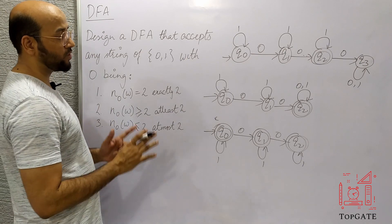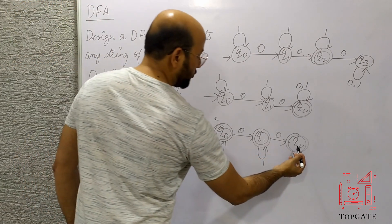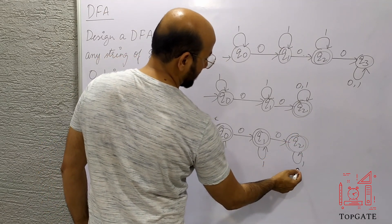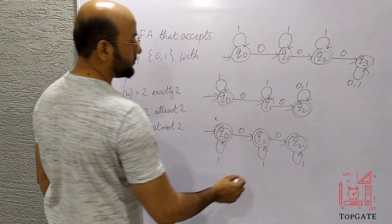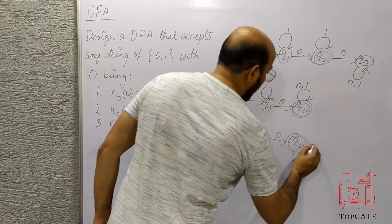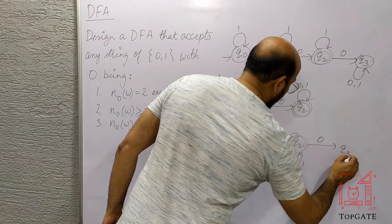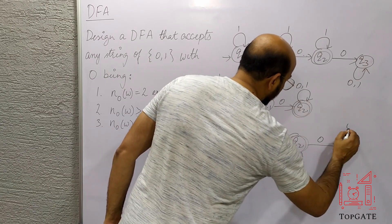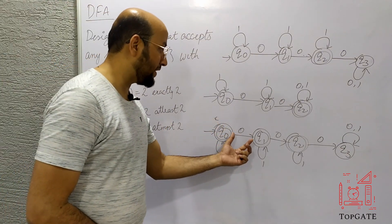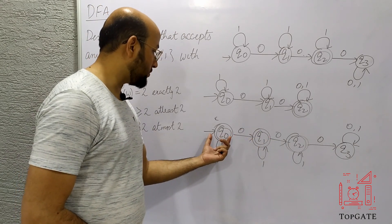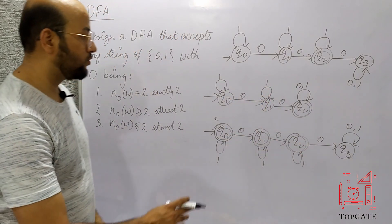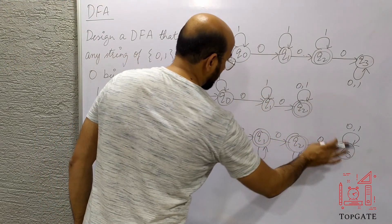Now it should not accept any string where the number of 0s is more than 2. At Q2 we need a transition on 0, but we cannot loop back because that would accept more than 2 zeros. So we go to a new dead state Q3 on input 0 from Q2, do not make Q3 final, and add a self-loop of 0,1 at Q3. This DFA will accept strings with 0, 1, or 2 zeros, but not more than 2.